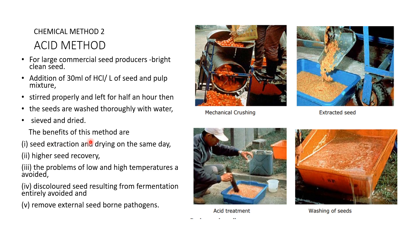Advantages of the acid method include: seed extraction and drying can be completed on the same day; extraction takes only one to one-and-a-half hours; higher seed recovery compared to fermentation and alkali methods; problems of low and high temperature are avoided; discoloration resulting from fermentation and alkali methods is avoided since bright and clean seeds are obtained; and seed-borne pathogens on the outer layer of the seed are also eliminated by the acid treatment.